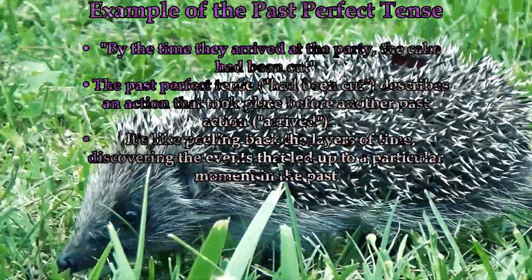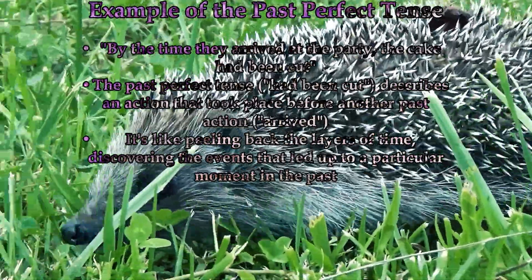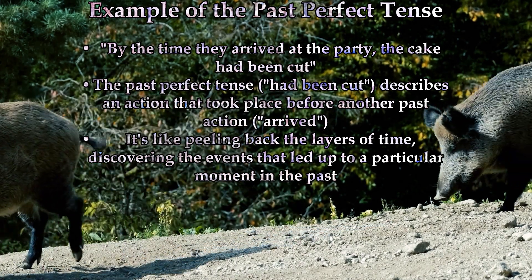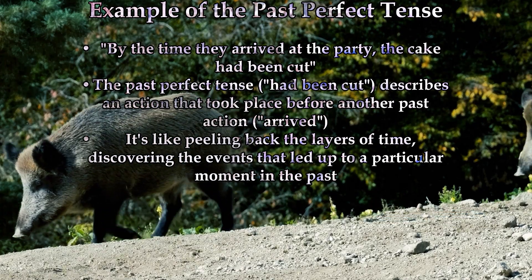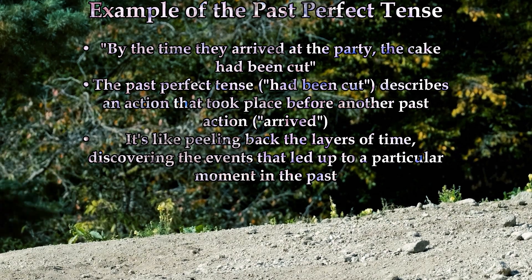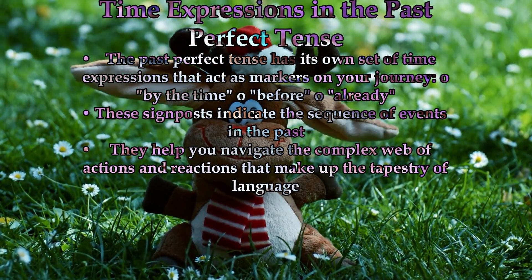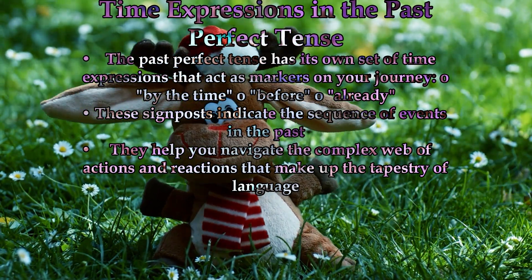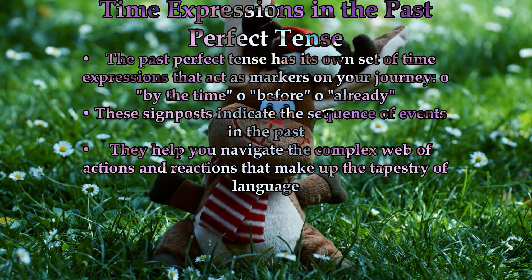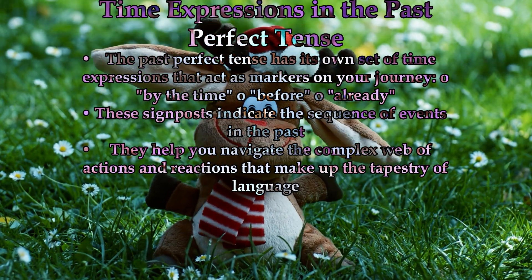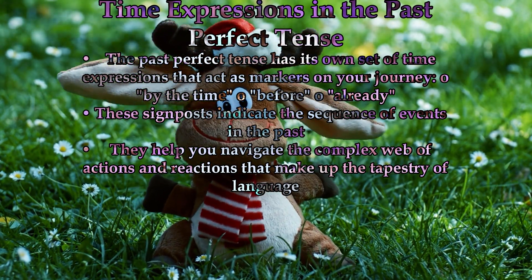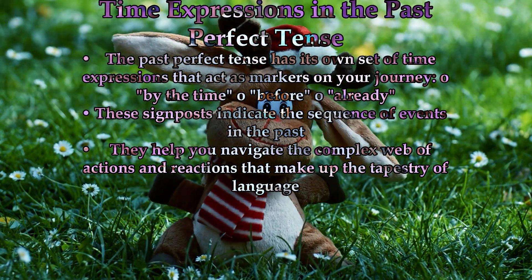Consider the sentence: 'By the time they arrived at the party, the cake had been cut.' Here, the past perfect tense — 'had been cut' — describes an action that took place before another past action, 'arrived.' It's as if we're peeling back the layers of time, discovering the events that led up to a particular moment in the past. And just like the simple past, the past perfect tense has its own set of time expressions: phrases like 'by the time,' 'before,' and 'already' are the signposts that indicate the sequence of events in the past.